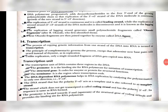In the previous class we had learnt about replication. Now let us learn about transcription. In the central dogma, the DNA to DNA process is called replication. And when we convert DNA to mRNA, that process is known as transcription — we are going to make a transcript of the DNA. The process of copying genetic information from one strand of the DNA into RNA is called transcription.